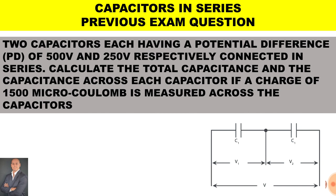Here's a previous exam type question. Two capacitors each having a potential difference of 500 volts and 250 volts respectively connected in series.